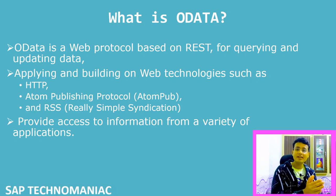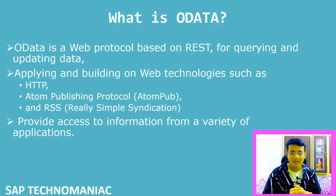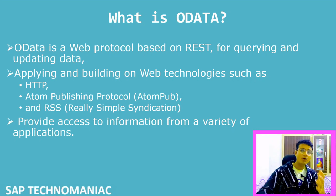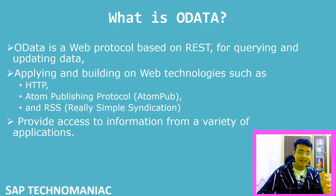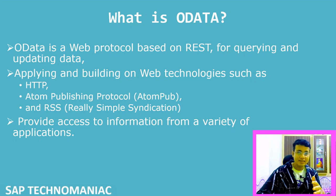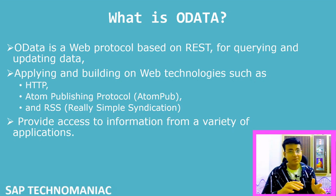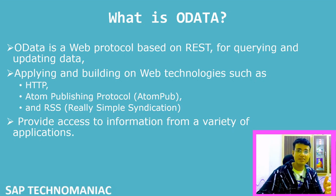OData is used for querying and updating data over the web. It is built primarily on web technologies like HTTP, ATOM Publish Protocol, and RSS. HTTP we have already discussed in my last video. ATOM and RSS — what they are — these things we will discuss in this video.